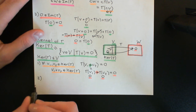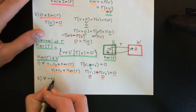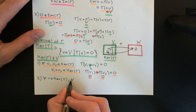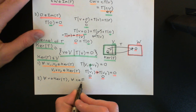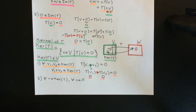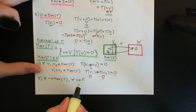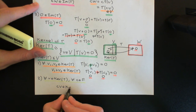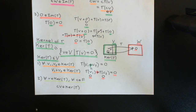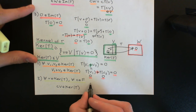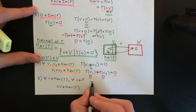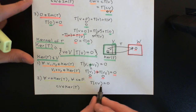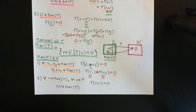Criterion number two says that if you pick any vector v in the kernel of the linear transformation and any element c from the field capital F, we need to prove that the kernel is closed under scalar multiplication — i.e. that c times v is still an element of the kernel. So I need to prove that T of (c times v) equals zero. That's just the definition of c times v being in the kernel of the linear transformation.